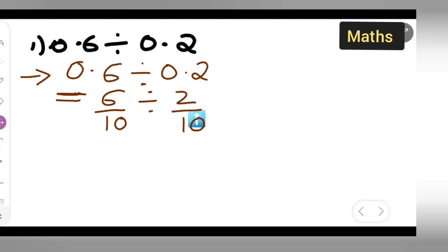Now how are you going to write this? 6 upon 10, write it as it is, then multiply it. This we are dividing by 2 by 10, so keep it as it is. Now in place of divide, you will put multiply sign, and then the reciprocal of 2 upon 10, that will be 10 upon 2.